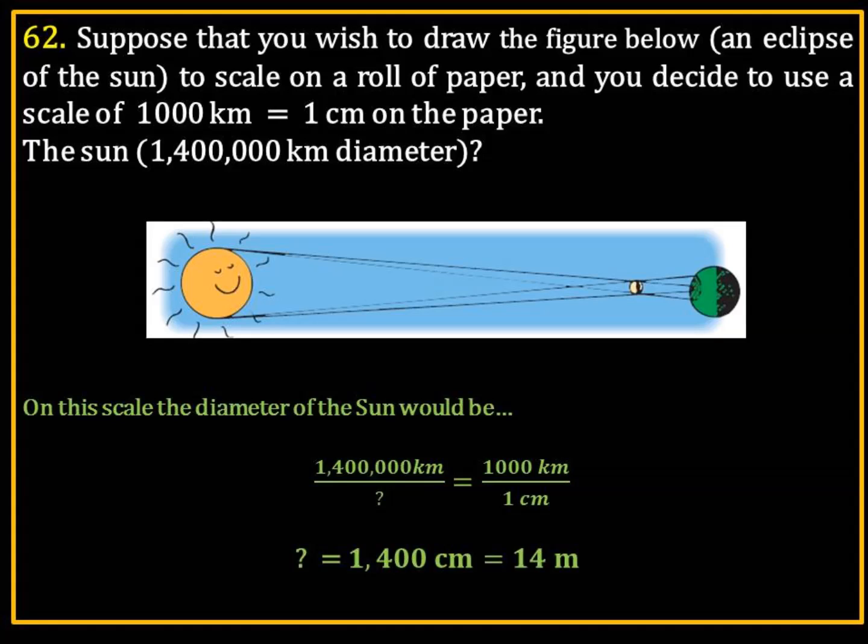So, again, the scale we're using: 1,400,000 kilometers over question mark equals 1,000 kilometers over 1 centimeter. I'm going to multiply 1 times 1,400,000 divided by 1,000, and that's going to equal 14 meters.